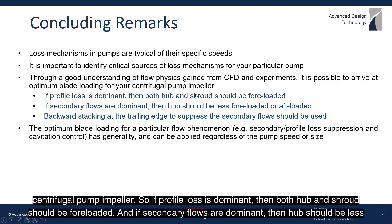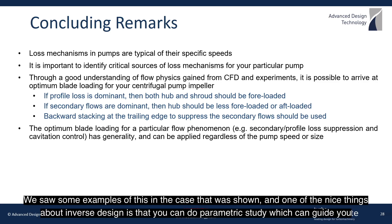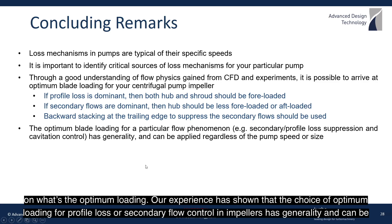If profile loss is dominant, then both hub and shroud should be fully loaded. If secondary flows are dominant, then the hub should be less fully loaded or even aft loaded compared to the shroud, and backward stacking at the trailing edge will help to suppress the secondary flows. We saw some examples of this in the case shown. One of the nice things about inverse design is you can do a parametric study, which can guide you on what's the optimum loading.